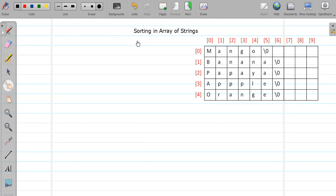Hello friends, welcome back. In this video we are going to study one more example on array of strings, and it is of sorting. Basically what we are going to do is sort the elements of this array of strings, means the first string will be apple, then banana, then mango, then orange, then papaya, and so on.